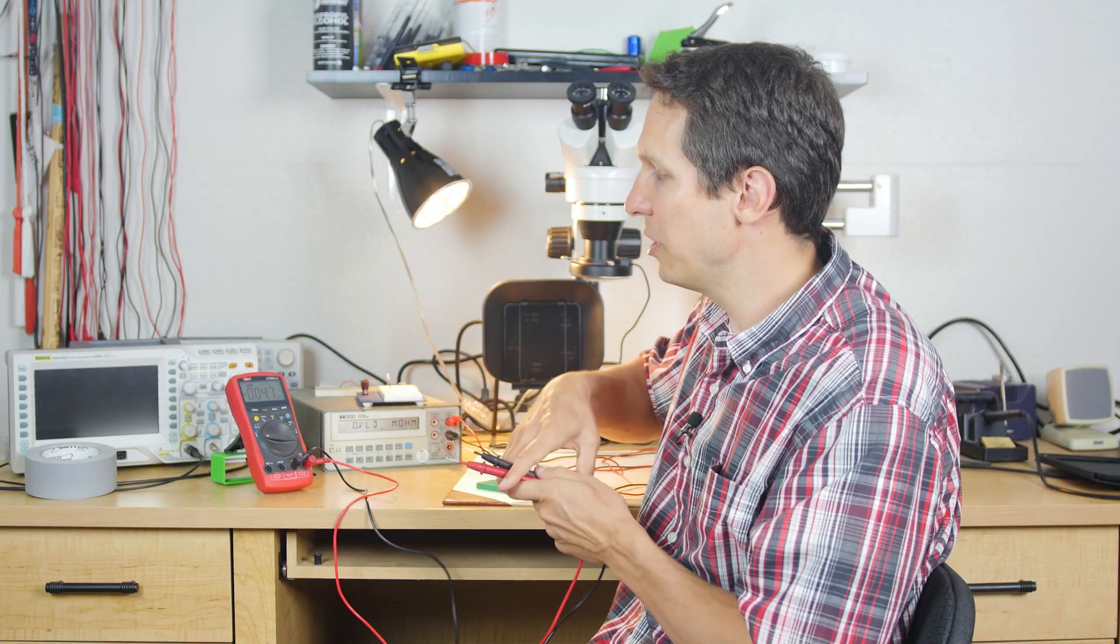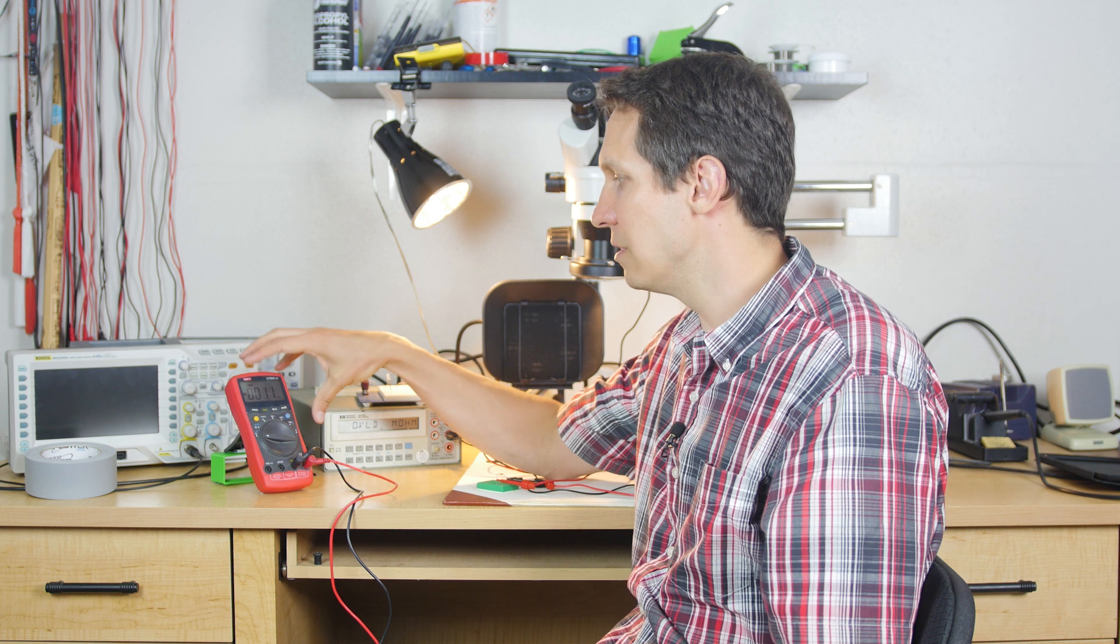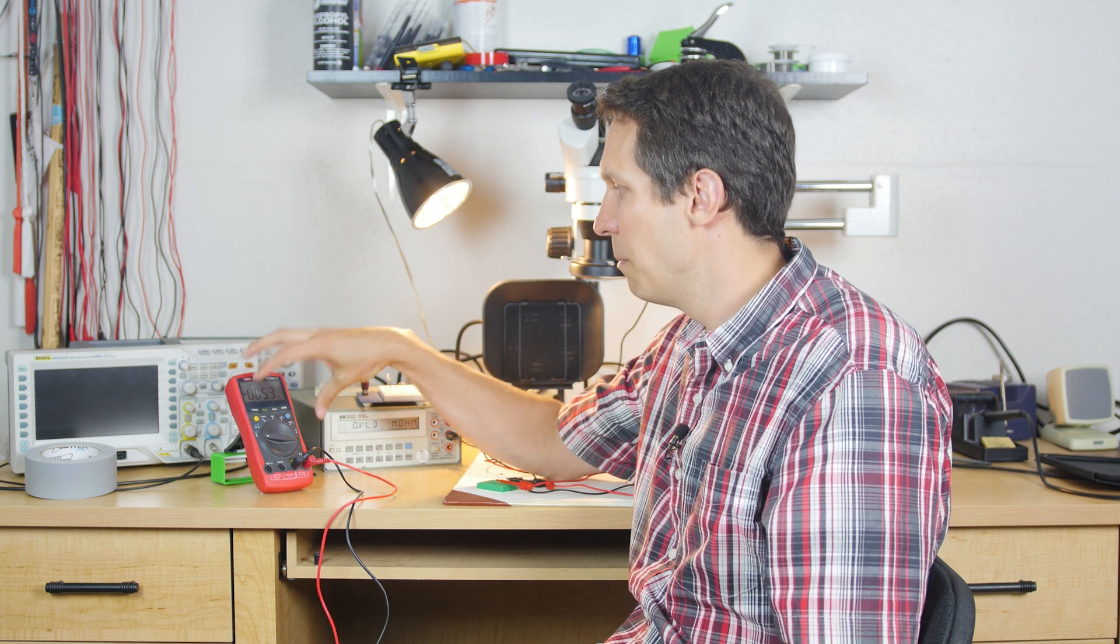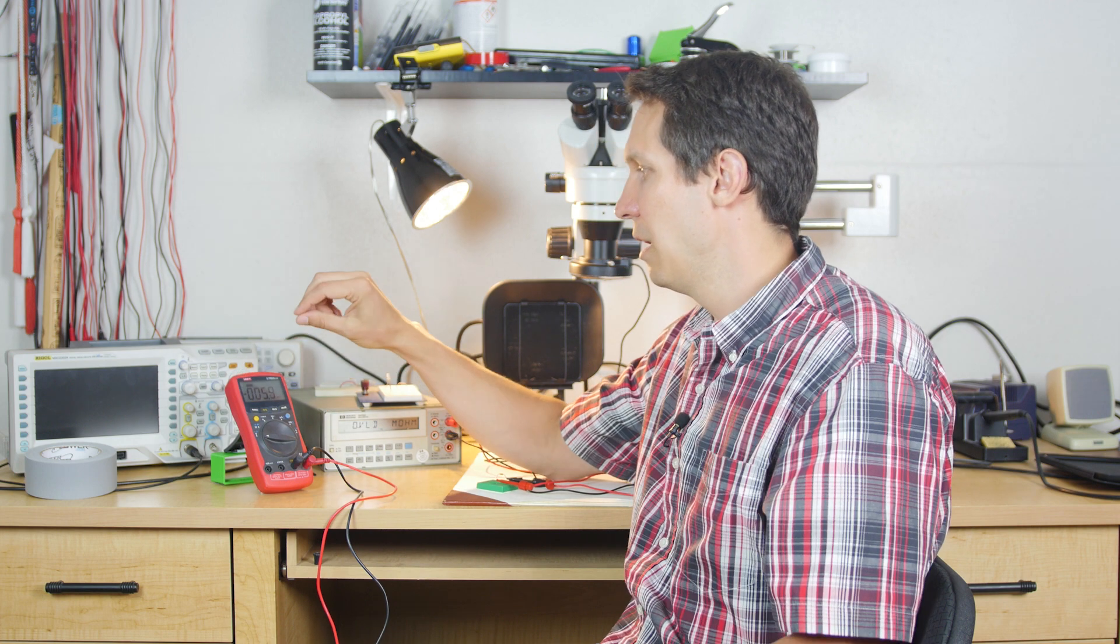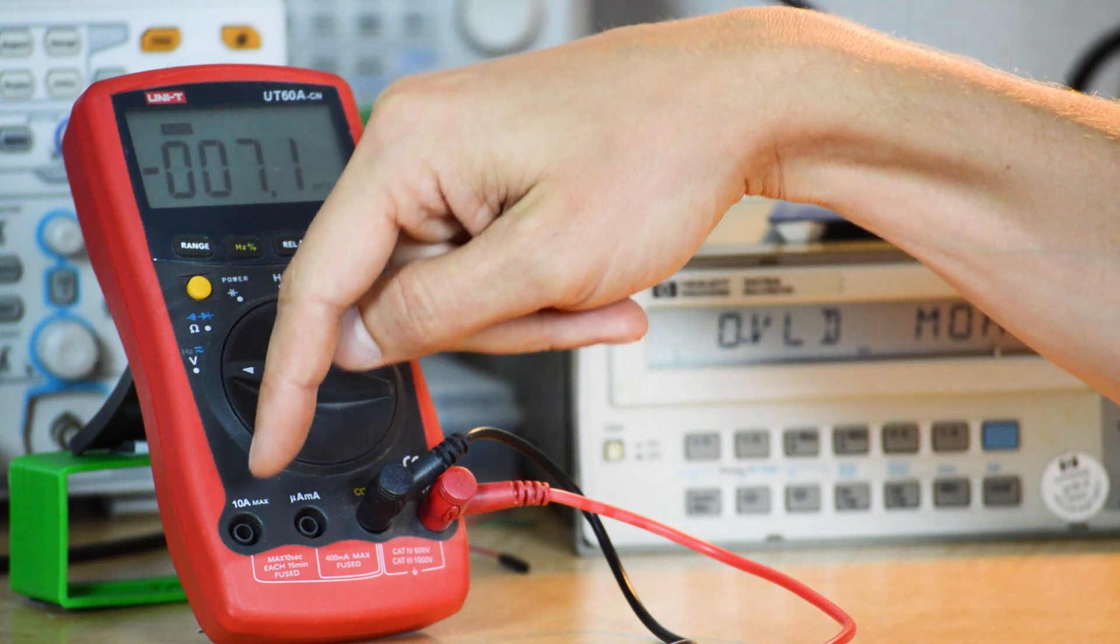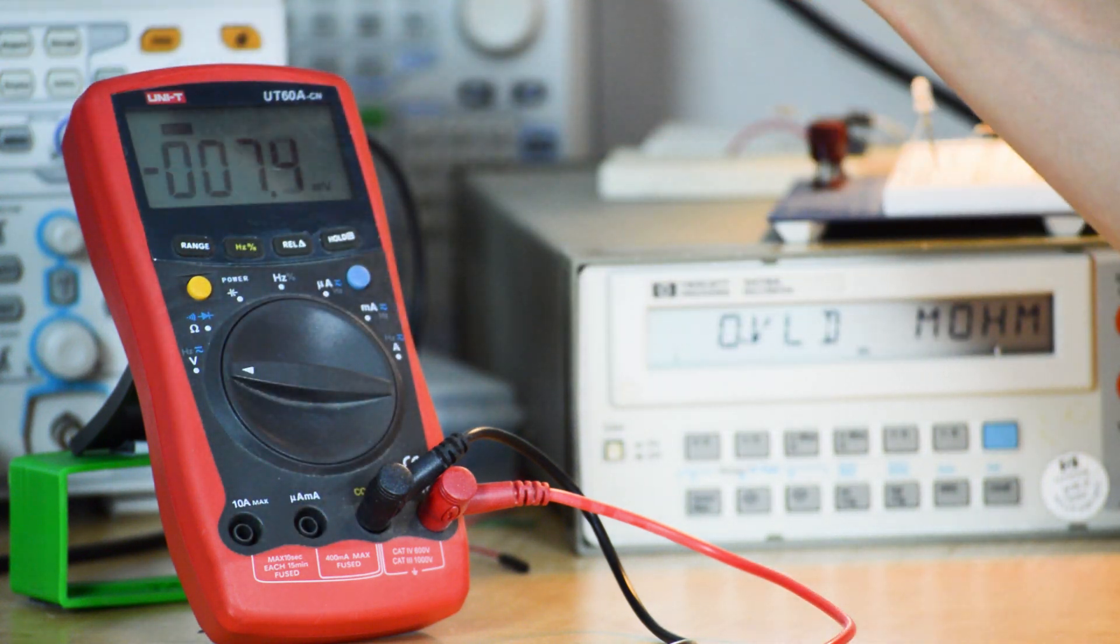Now the way this works is when it's measuring voltage the impedance that the circuit sees from this is almost infinity, as close as possible. Obviously it's not which is where you get some weird variations, but you want your impedance to be nearly infinity. However, as soon as you put this over to the micro amp, milliamp, or the 10 amp area, it drops its internal impedance to almost zero.